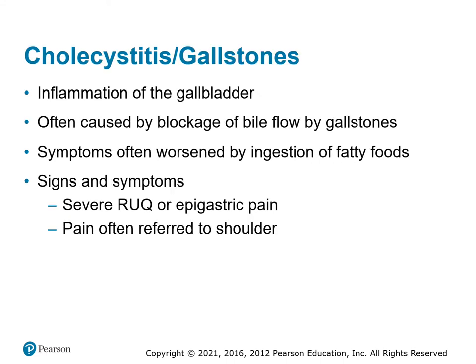Cholecystitis or gallstones — inflammation in the gallbladder with blockage. The patient has a hard time digesting fatty foods because bile is used by the digestive system to break down fat. They'll have upper right quadrant pain or epigastric pain, and this is one that's referred to the shoulder sometimes, mimicking other conditions.